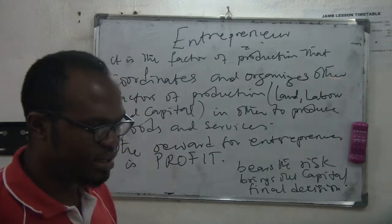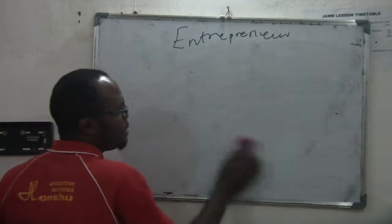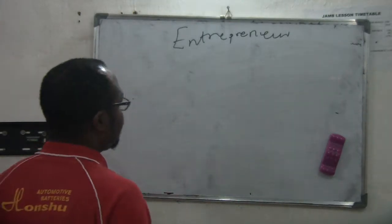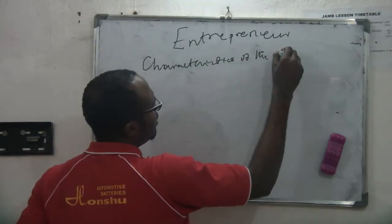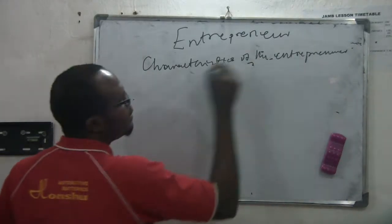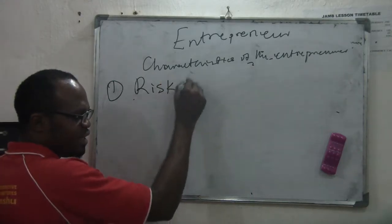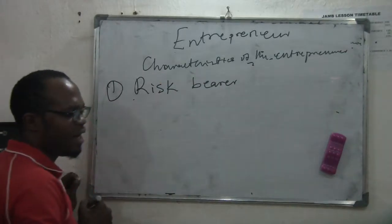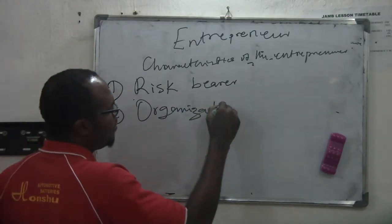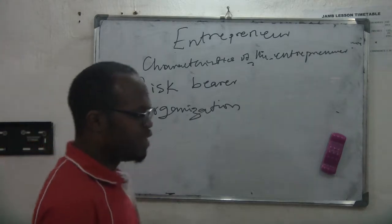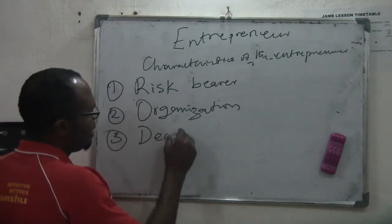He bears the whole risk — if he wants to buy a new acquisition, he does it with his own money, knowing that if it does not yield profit he will bear the loss. The entrepreneur bears all the risk in setting up a business. He is the person that brings out his money to set up the business and takes the final decision on what happens in the company.